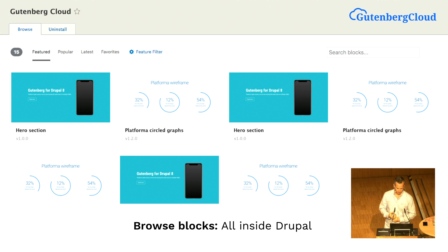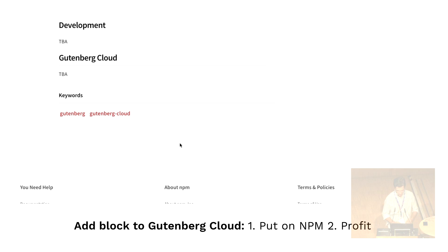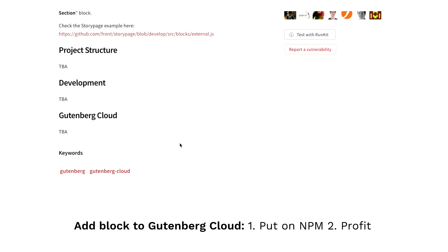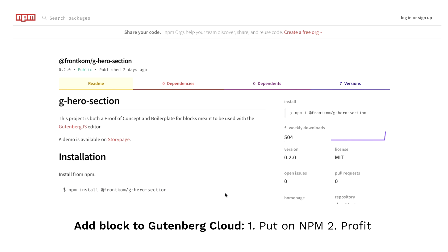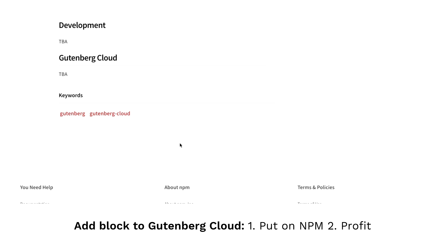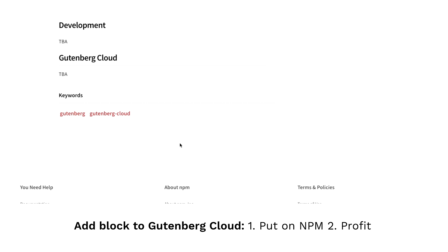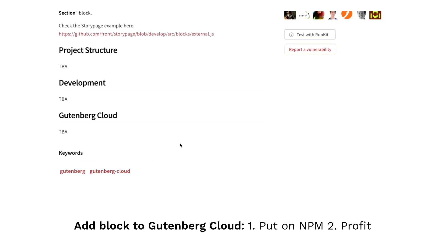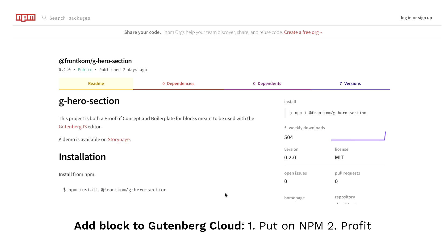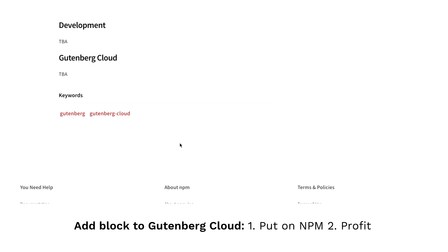This is not released yet — it's a proof of concept. Any developer can add their own blocks to Gutenberg Cloud by putting code on NPM and tagging it as Gutenberg-Cloud. Since the blocks are JavaScript only, they work across Drupal and WordPress alike. This is really exciting — you can now build frontend for Drupal and WordPress at the same time.